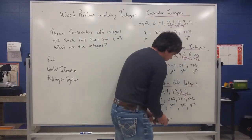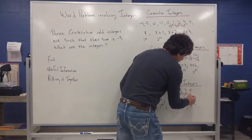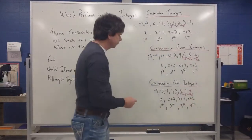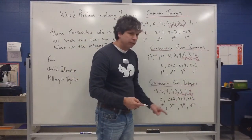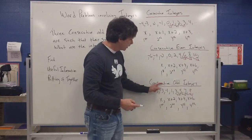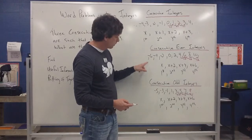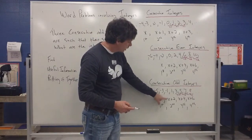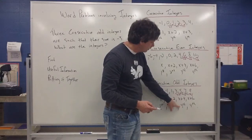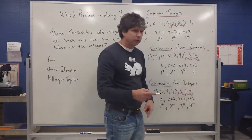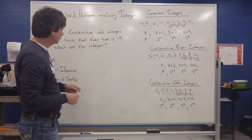After 7, the next consecutive odd integer would be 9 — you add 2 to get back to 9. So if you look at consecutive odd numbers, they also increase by 2. Consecutive odd numbers can be represented just like consecutive even integers: x is the first, x plus 2 is the second, x plus 4 is the third, and x plus 6 is the fourth consecutive odd integer.